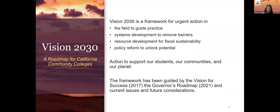Big news for our system. In June, we welcomed our new permanent system chancellor, Chancellor Sonia Christian. Two months onto this job, she's already setting an ambitious and actionable framework for our system. Vision 2030 is not a new vision, it's a framework guided by the vision for success, which is our North Star, and then the governor's roadmap. Vision 2030 goes deeper into the how.